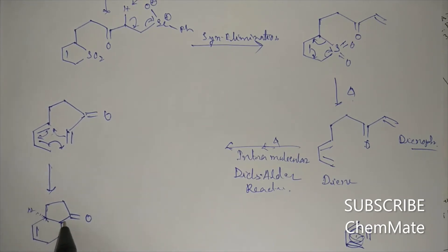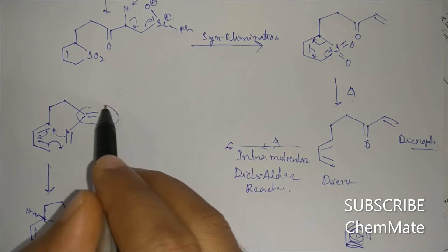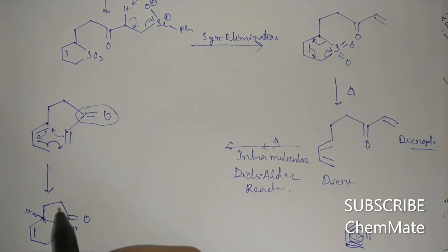Now we have to determine the stereochemistry of these two hydrogens. We don't know the stereochemistry of these two hydrogens. Now as there is a keto group here, endo orientation will be preferred, so the transition state will be like this.